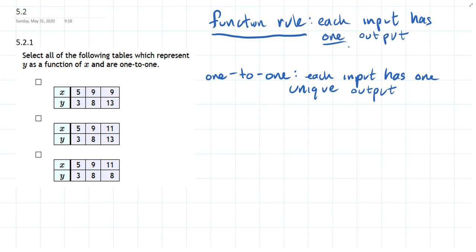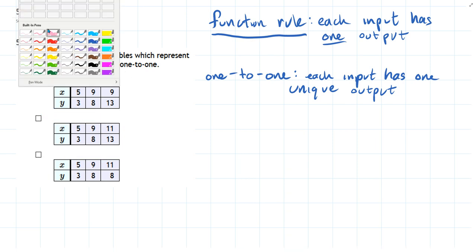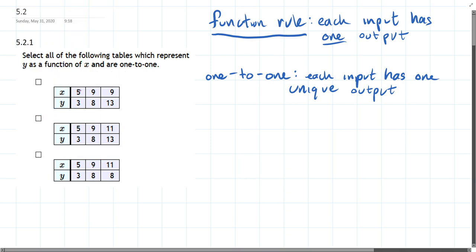We're going to first test these three right here to see if they are functions. And let's go ahead, I'll use red here. So input is always going to be on the top, and output is going to be on the bottom. Sometimes you'll see tables written vertically where you have in on the left and out on the right. But we have rows, not columns.